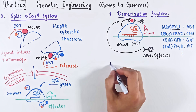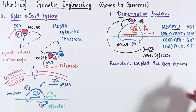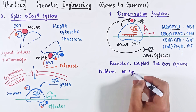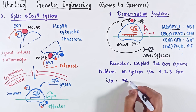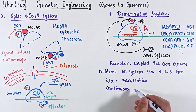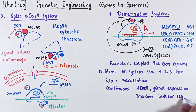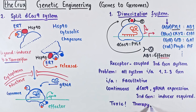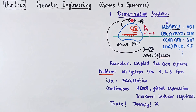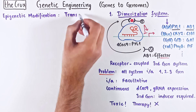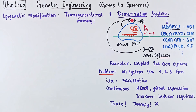There's also a receptor-coupled third-generation dCas9 system. But here's another major flaw shared by all generations and strategies discussed: the activation or repression is facultative, meaning continuous expression of dCas9 and guide RNA is required, and the third generation additionally requires an inducer molecule. The continuous expression of the inducer and dCas9 guide RNA could be toxic for many reasons — a particular problem when thinking about dCas9-based gene therapies. The solution is to build and modify the epigenome and establish a transgenerational memory in the cells so that continuous dCas9 expression or an inducer is not required.